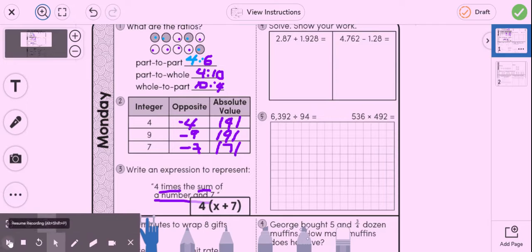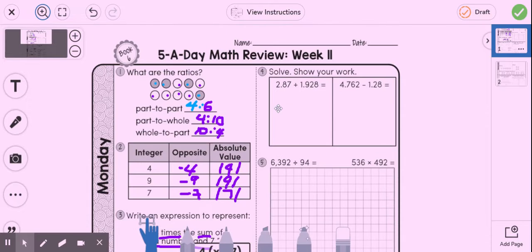All right, number four. For number four, we're going to add and subtract decimals. So it's important to remember that when we're adding and subtracting decimals, we line up the decimals. So I'm going to move this over here. So 1.928 and 2.67. And then I simply add up the digits. Okay, so I'm adding.